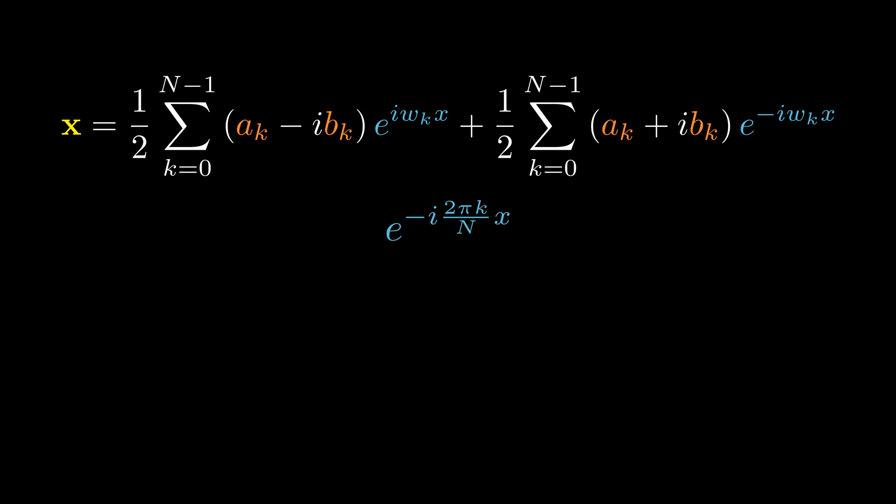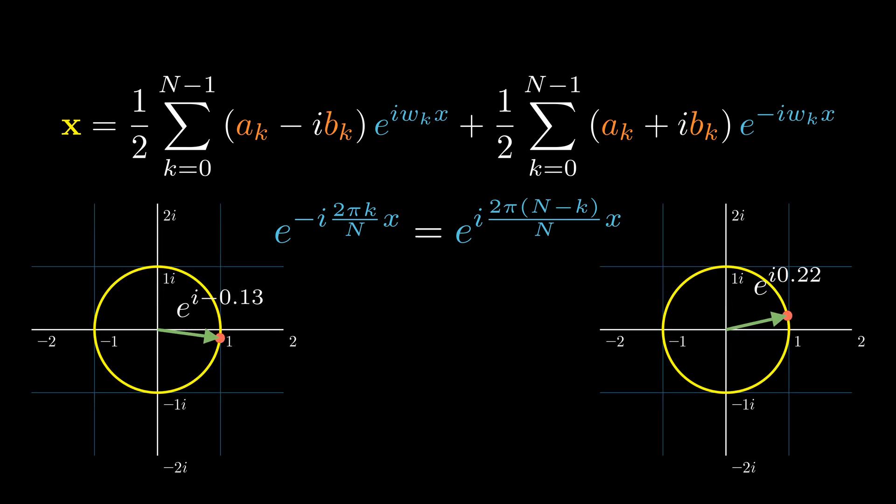The omega k is 2 pi k divided by n. This is equivalent to 2 pi times n minus k divided by n. Intuitively, we can arrive at exactly the same point on a unit circle by either rotating an angle of theta clockwise or rotating an angle of 2 pi minus theta counterclockwise.